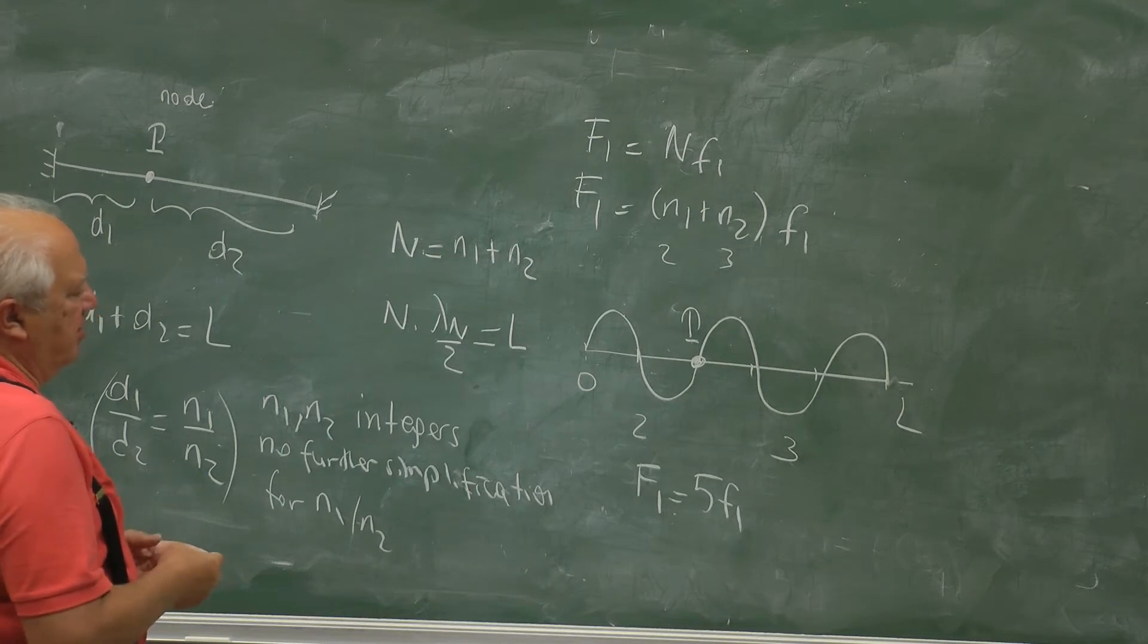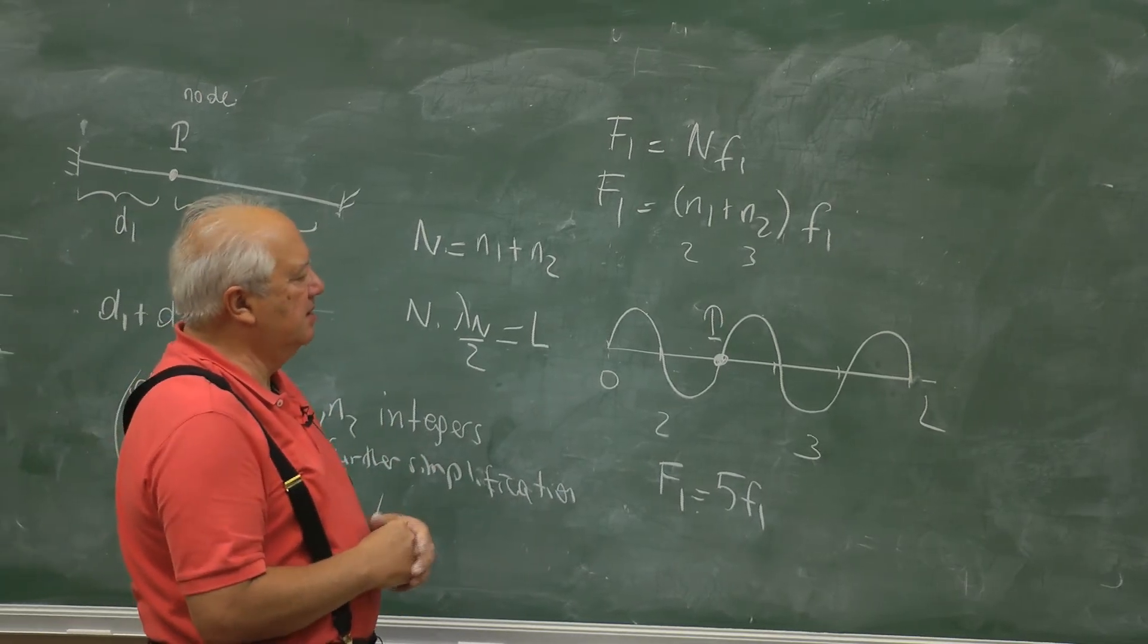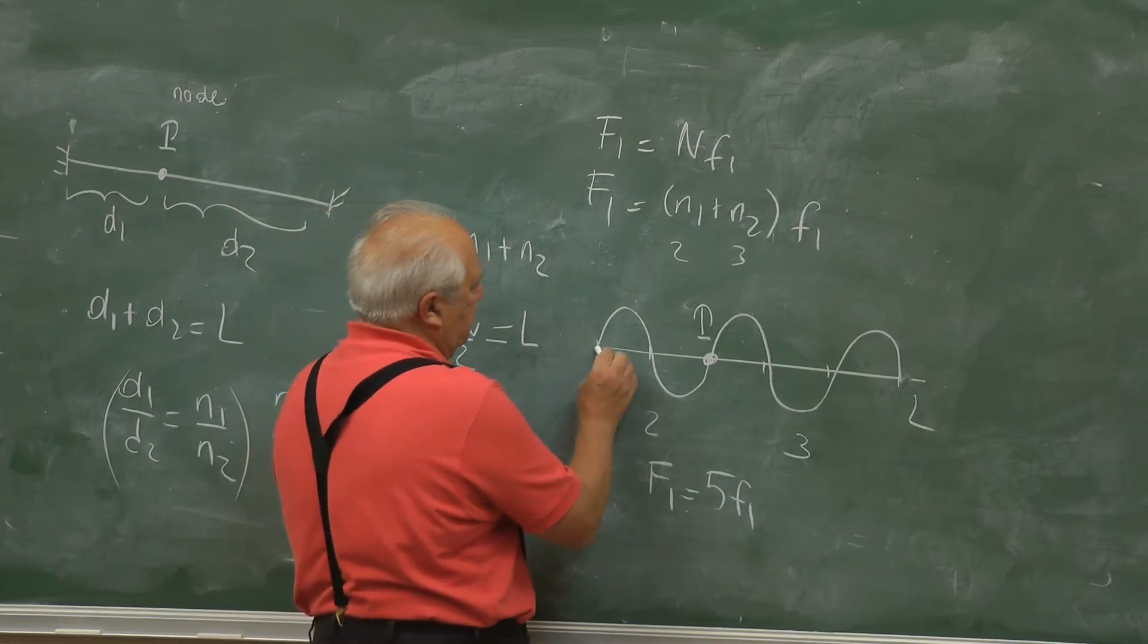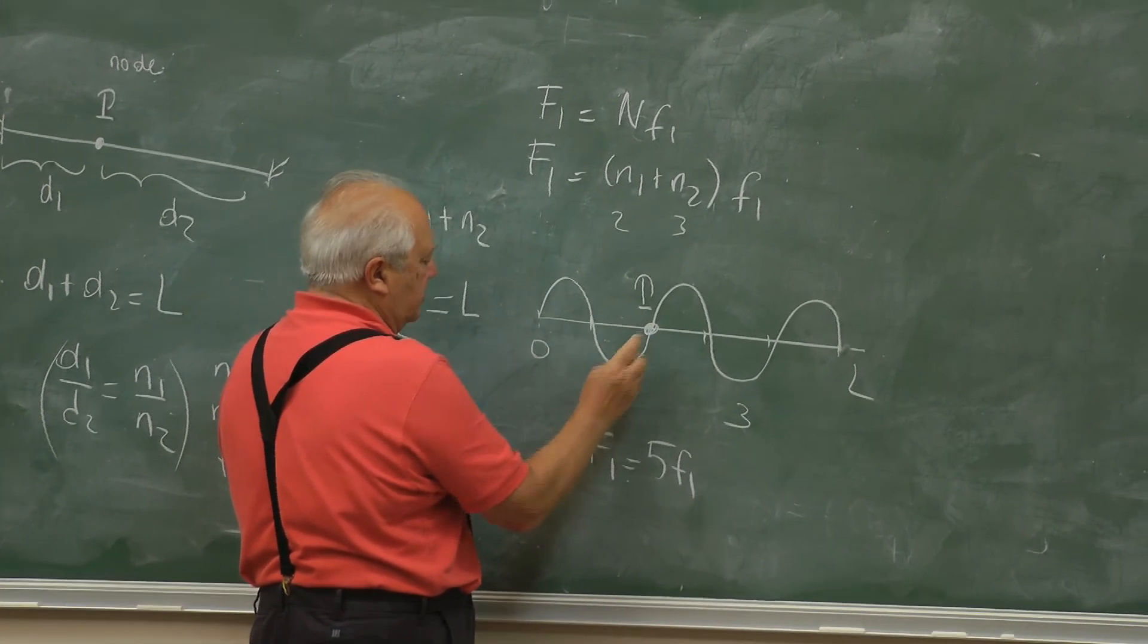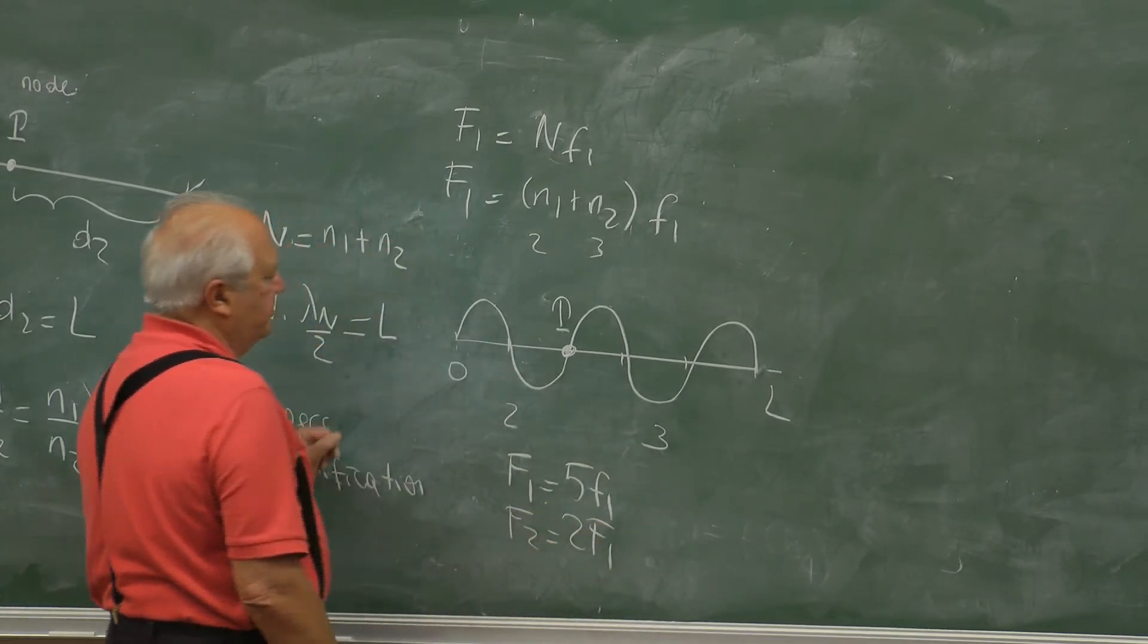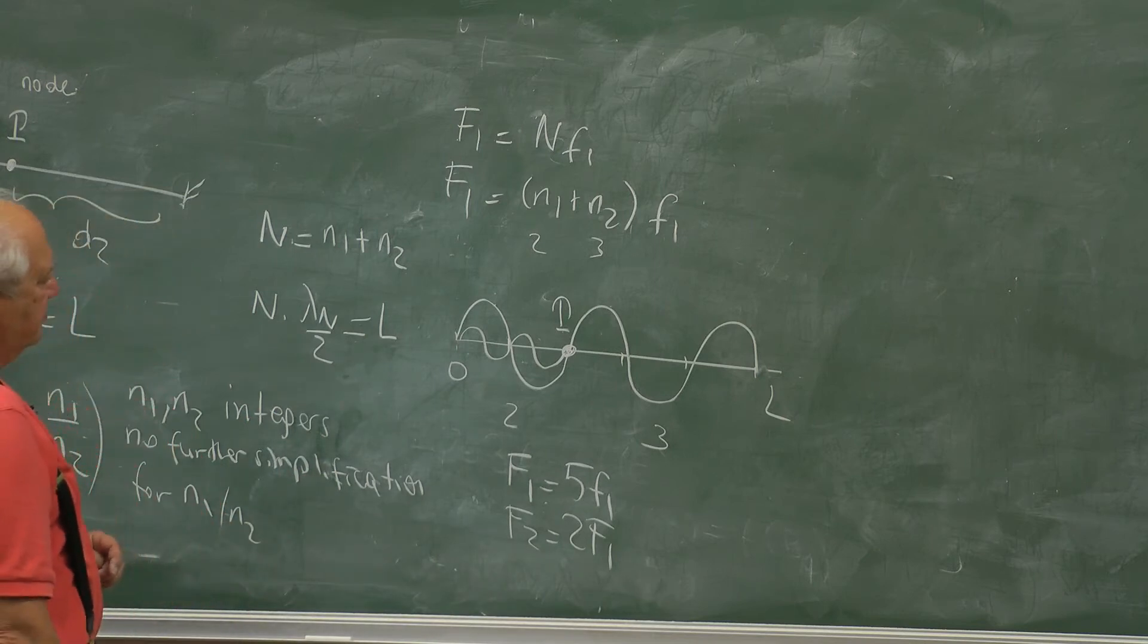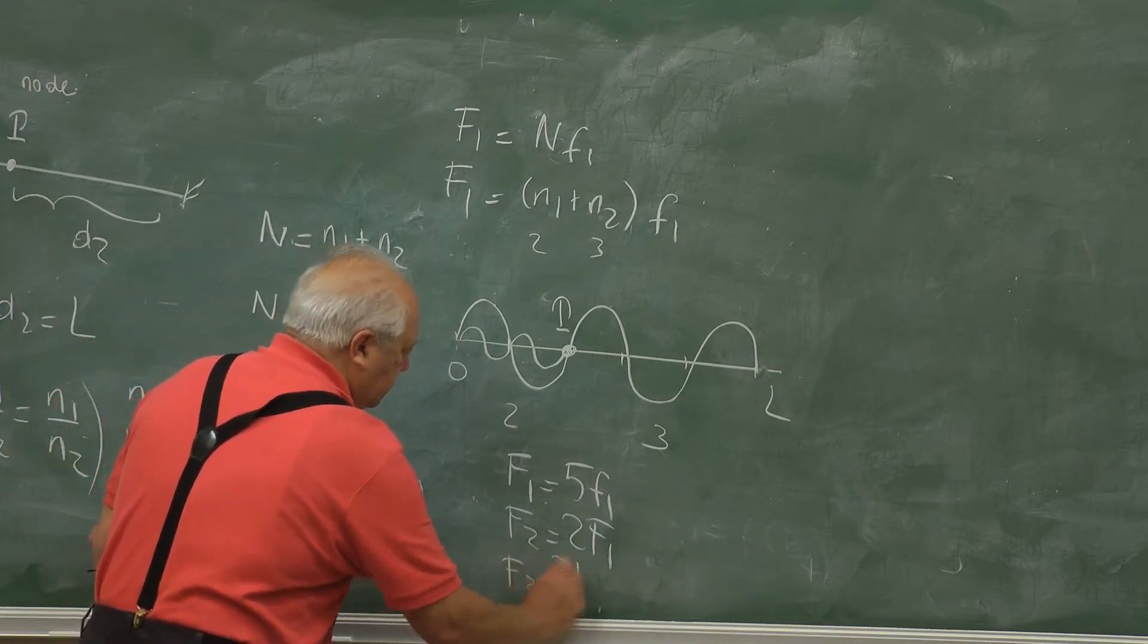The next frequency heard, the next frequency produced, remember the condition is that P always remains as a node. So the next frequency is that higher normal modes, the first mode that will have P as a node again. So that's f2 is 2 f1, f3 is equal to 3 f1.